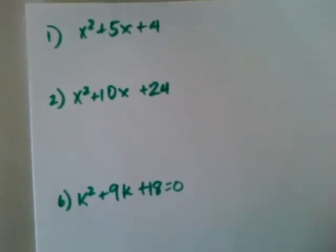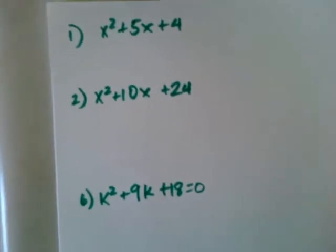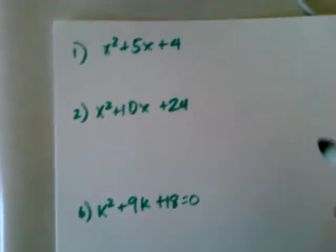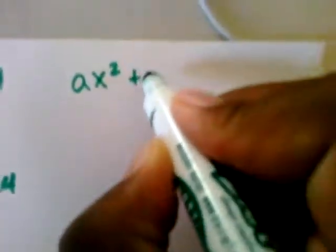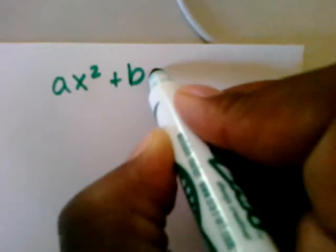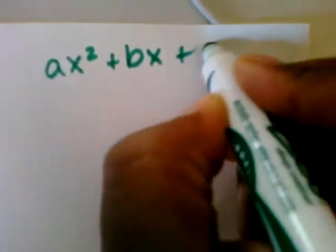All right, today we're going to talk about factoring trinomials where A equals 1. And what I mean by A is trinomials in their standard form are written, that is quadratic trinomials, are written like this.